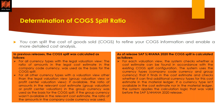The last topic today is determination of COGS split ratio. You can split the cost of goods sold to refine your COGS information and enable more detailed cost analysis — essentially understanding the manufacturing cost and margin. There is a comparison between previous releases and the 2020 release. Previously, for all currency types with a legal valuation view, the ratio of amounts in the legal cost estimate in company code currency was used as the basis — so the basis was company code currency annually in the legal cost estimate.